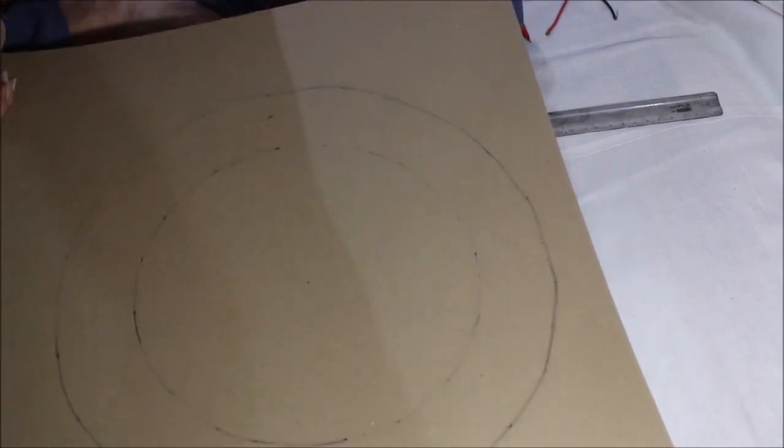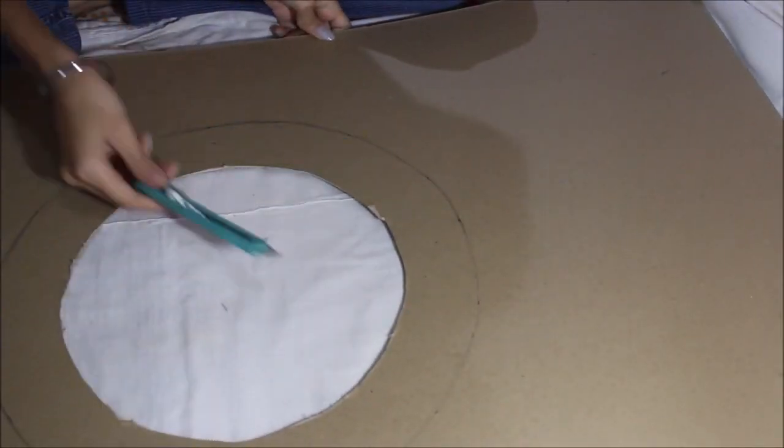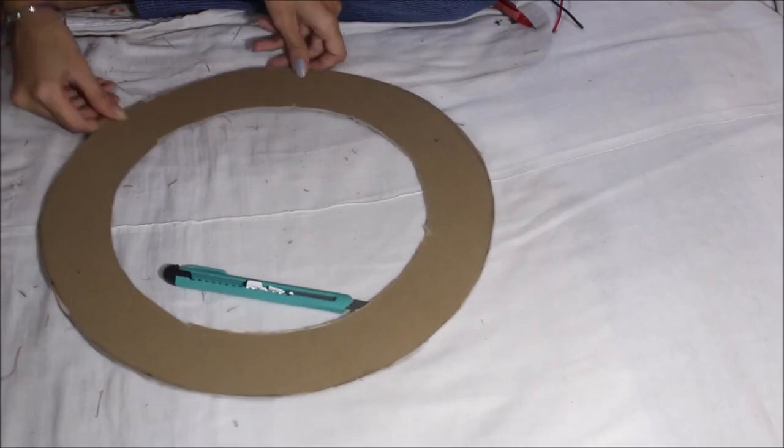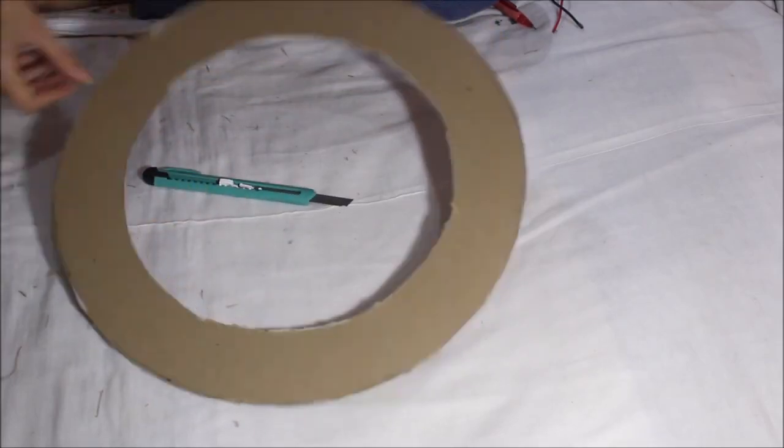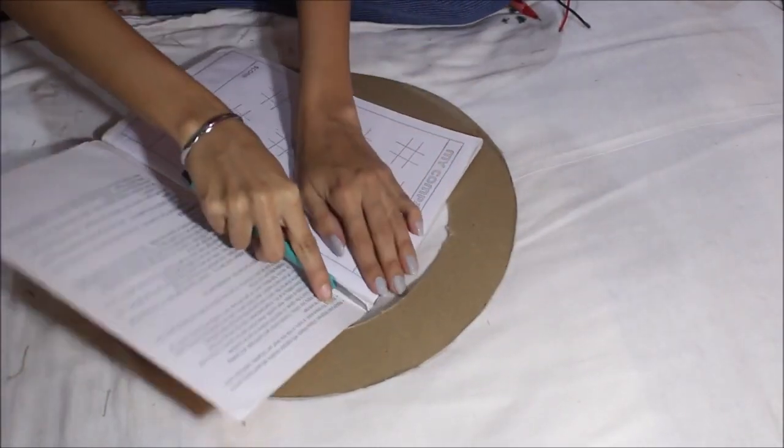So first cut the inner circle and then cut the outer circle, and it should look something like this. Then using a notebook, an old notebook, you can cut the front cardboard off.